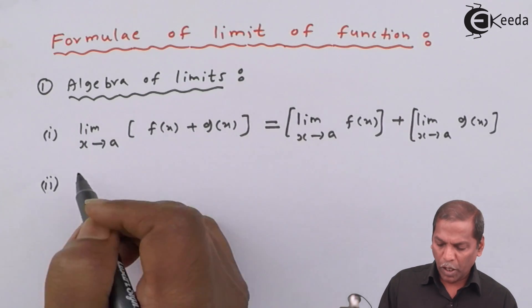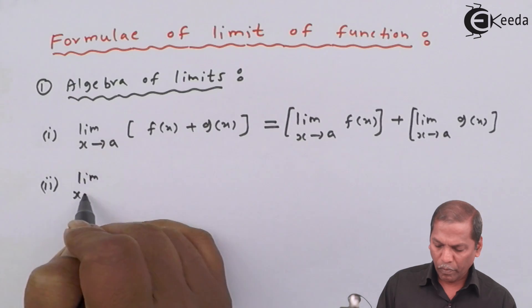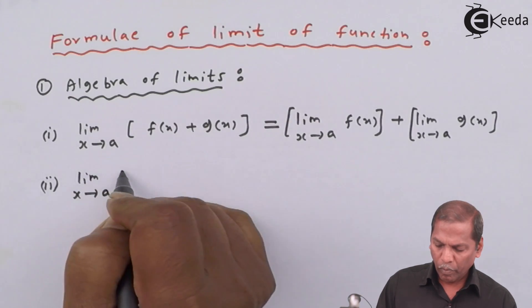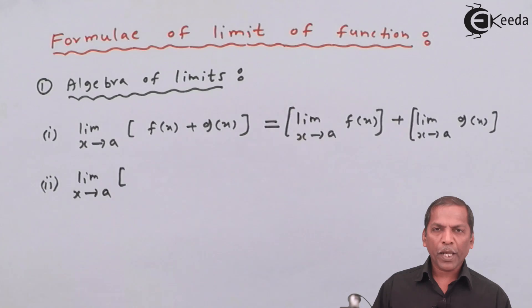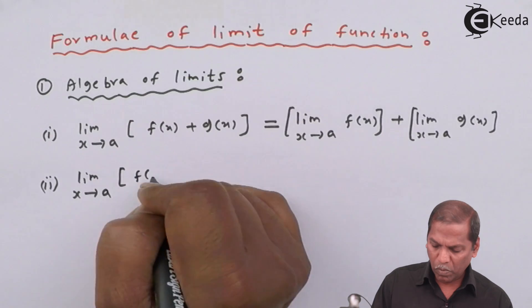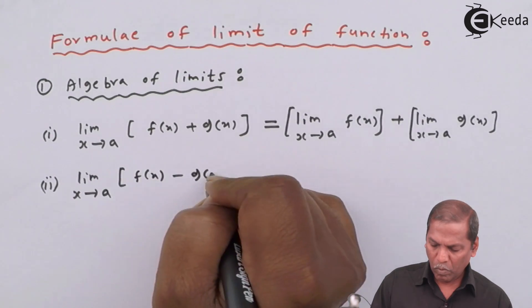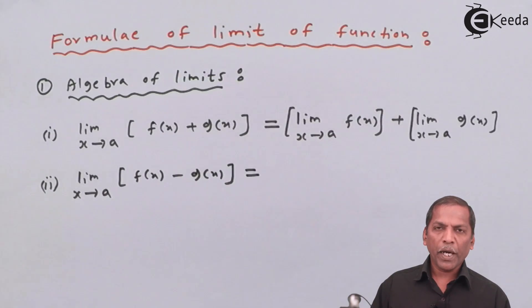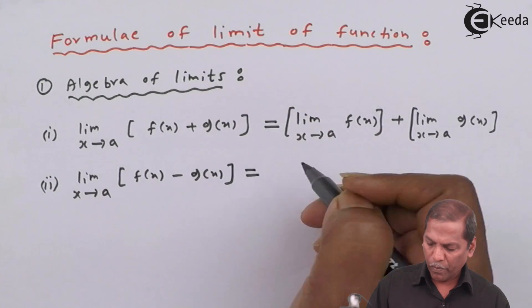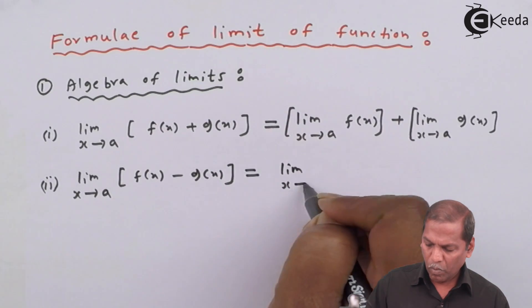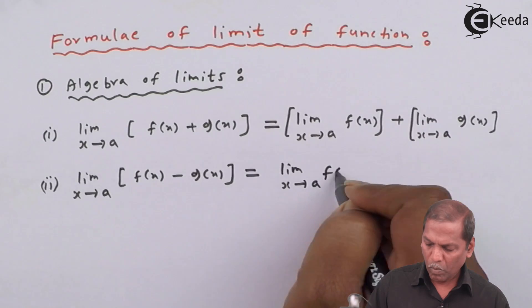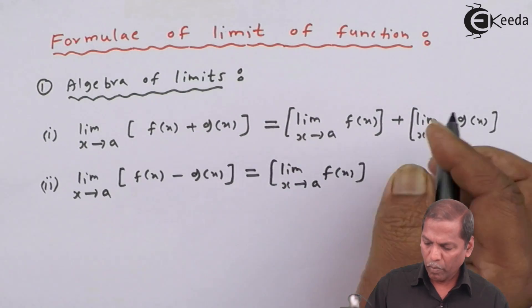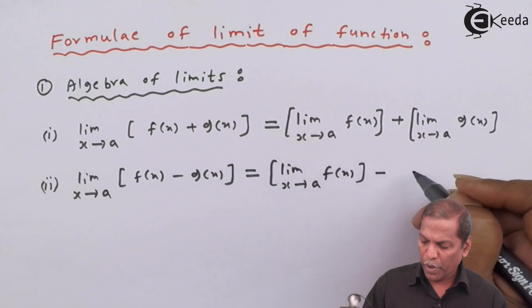Number 2: limit x tends to a in bracket f of x minus g of x bracket complete, that equal to limit x tends to a f of x minus limit x tends to a g of x.